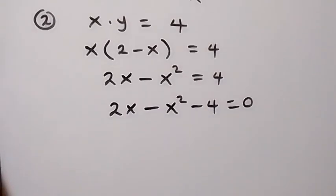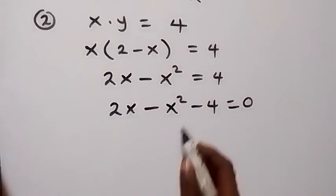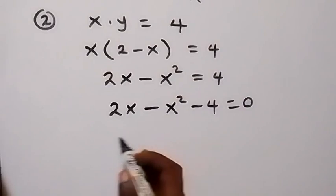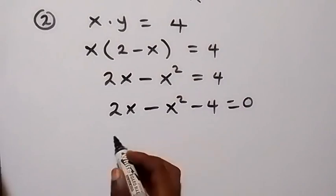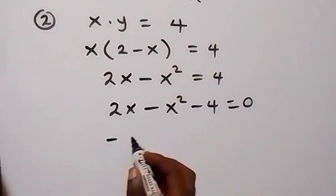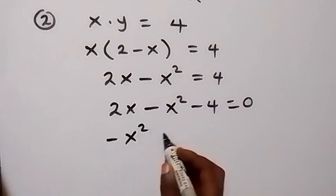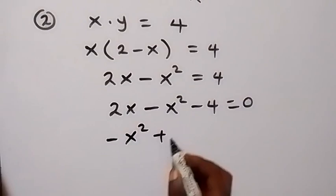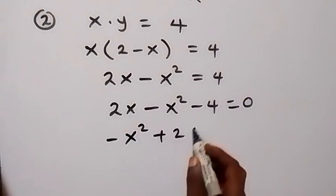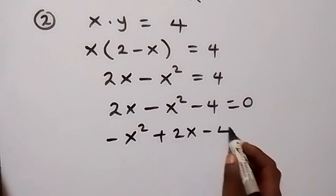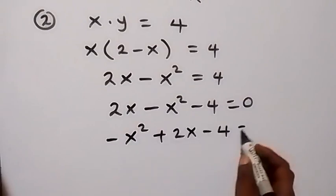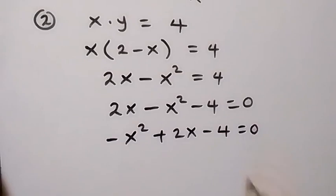Then let's rearrange this to form a quadratic equation. So we have minus x squared plus 2x minus 4 equals to 0.